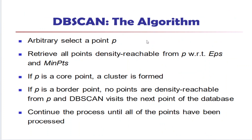How does the DB scan algorithm work? We select a point P and check all points that are density reachable from P with respect to epsilon and minimum points. If P is a core point, we form a cluster with all data objects surrounding P. If P is a border point, no points are directly density reachable from it, so DB scan moves to the next point in the database. This process repeats until all points in the dataset have been processed.